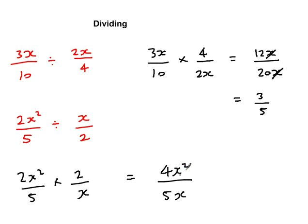Now, think of it like this. I've got an x squared. That's x times x on the top, and I've got an x on the bottom. So one of these x's can cancel out. So I get 4x over 5.